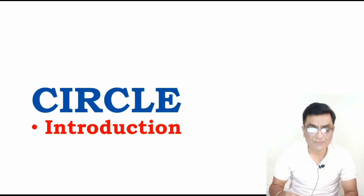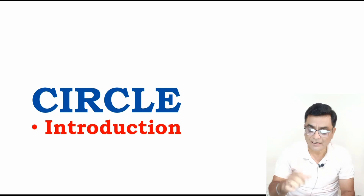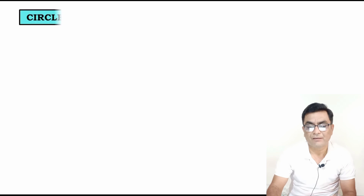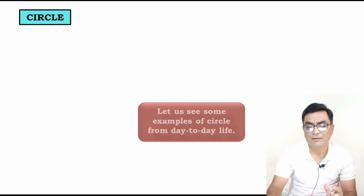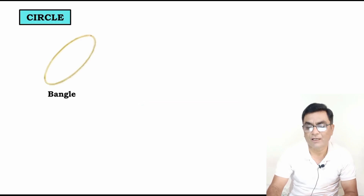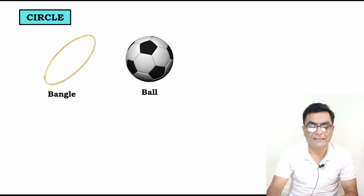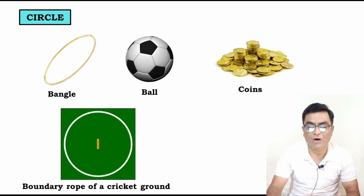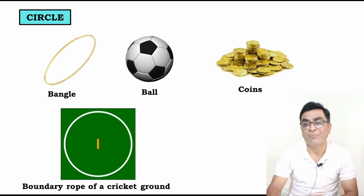First, we will get to know what a circle is. Some examples from day-to-day life: bangle, ball, coins, and the boundary rope on a cricket ground. We will look at four examples and identify which two are wrong.